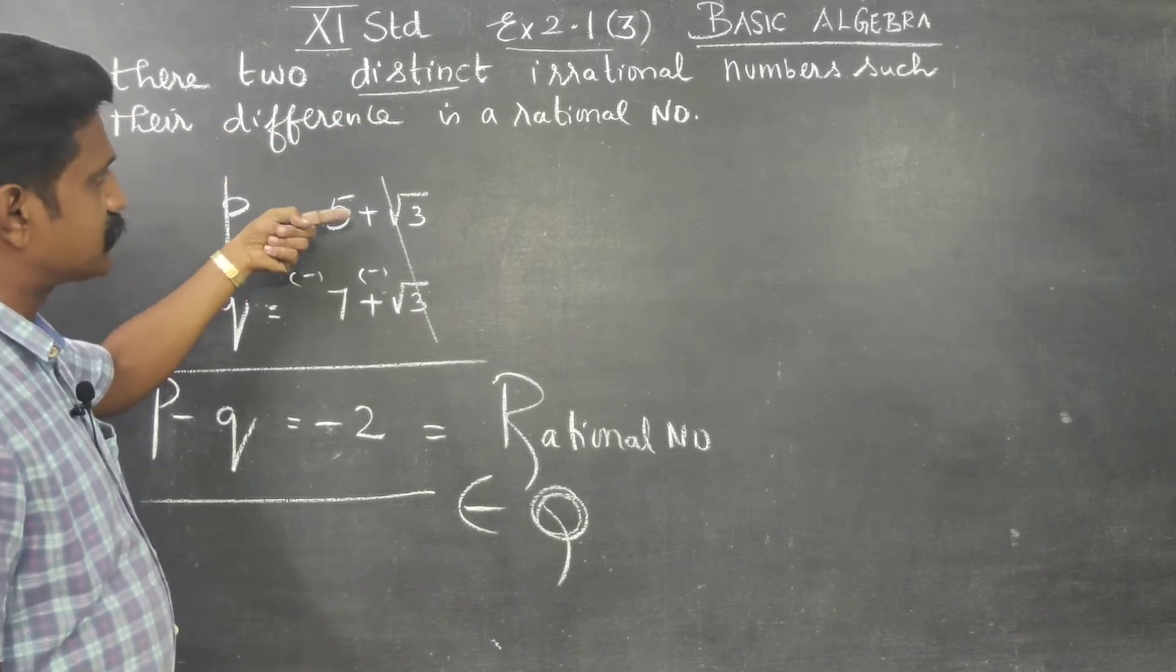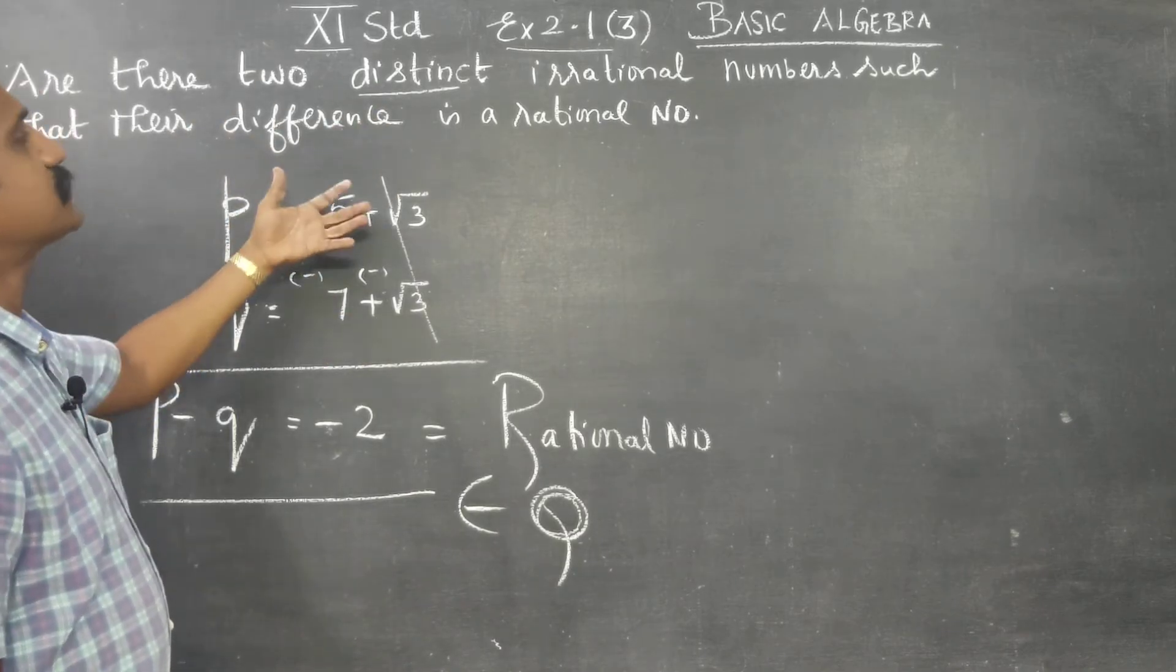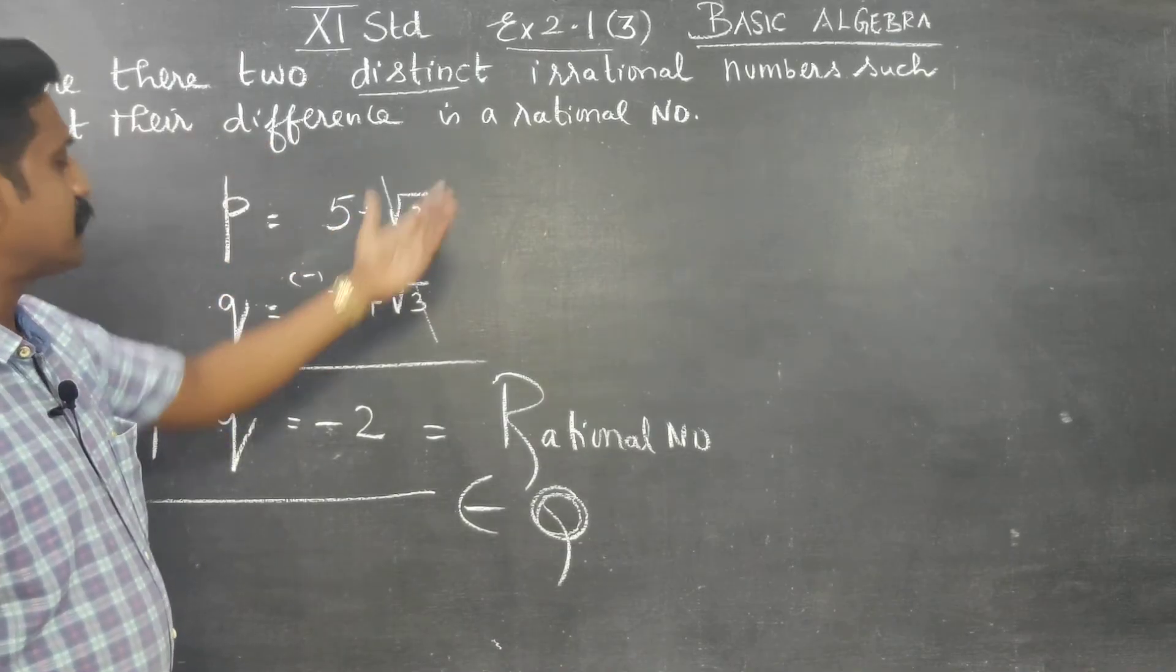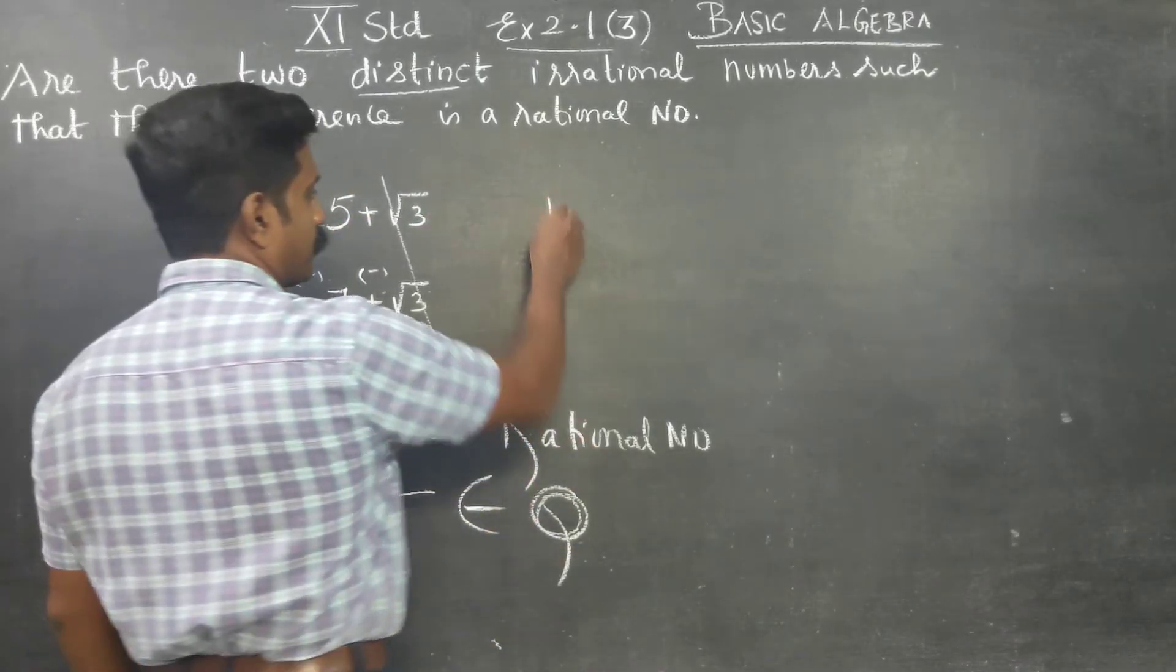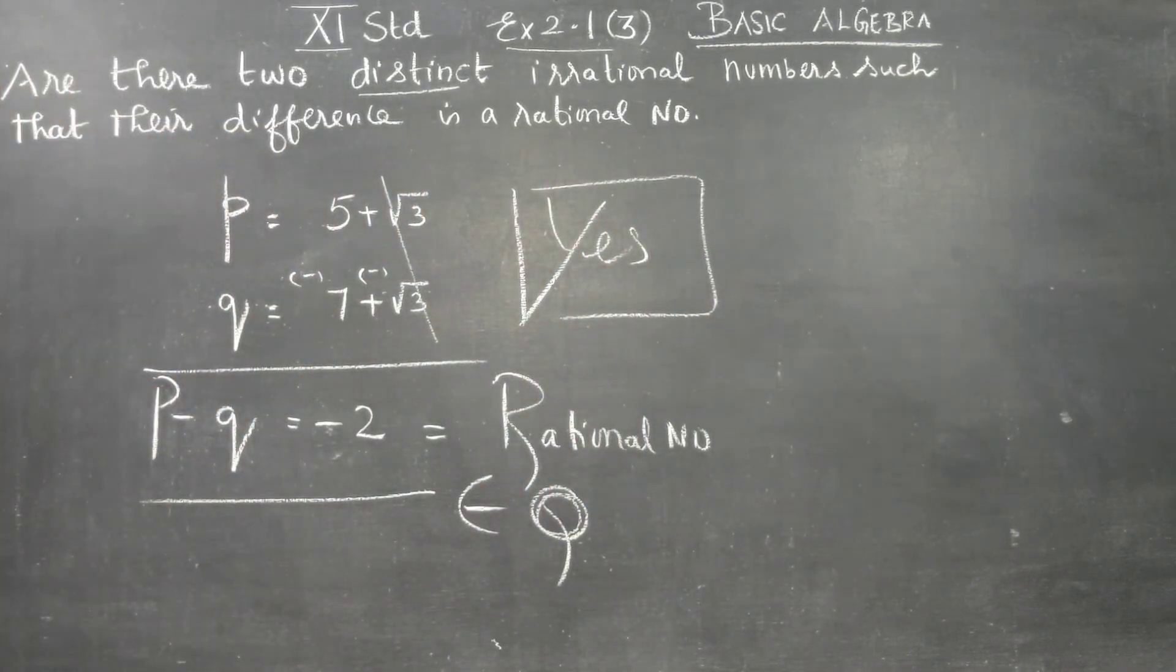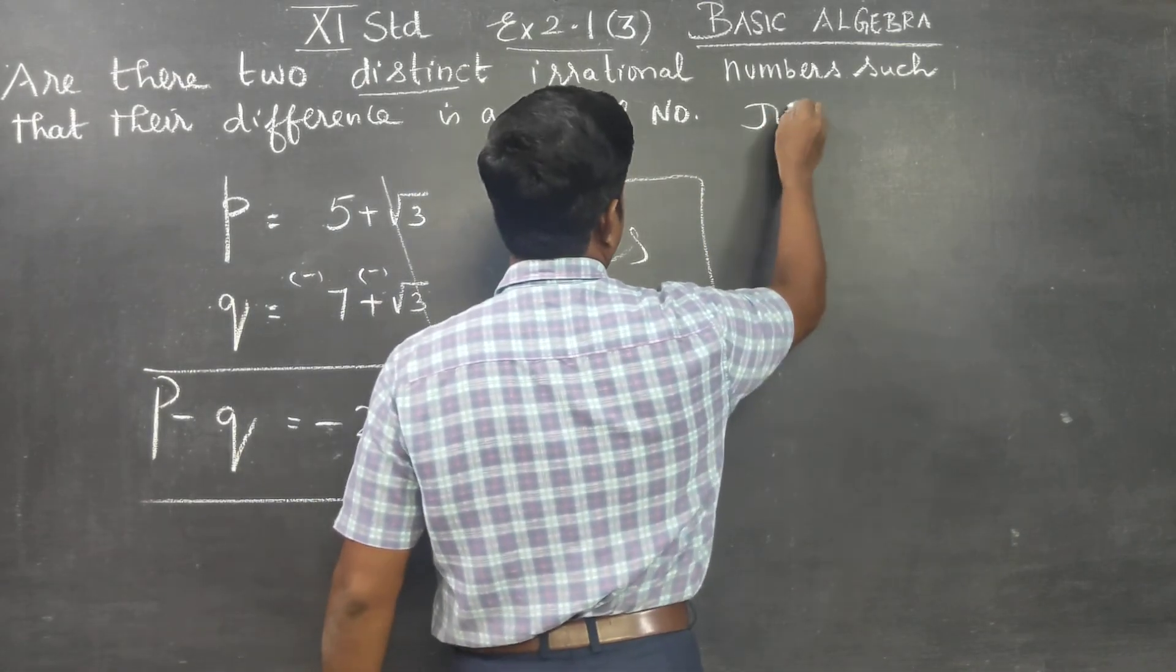Are there two distinct irrational numbers? Yes, there are distinct irrational numbers. When they find their difference, their answer will be a rational number. Therefore, you can give a big yes for this sum. Yes, there are two distinct irrational numbers. The difference is minus 2. We are justifying our answer.